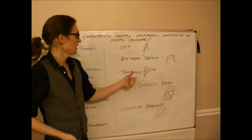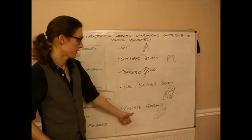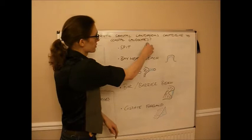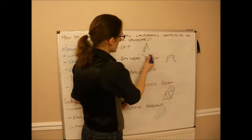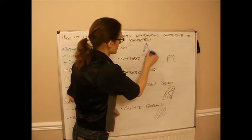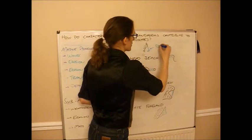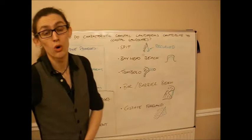So in terms of our depositional features, we've got a spit, a bayhead beach, a tombolo, a bar or barrier beach, and a cuspate foreland. A spit is where longshore drift carries on past the curve in the coast. And basically just extends outwards. And you get the sand building up. And sometimes it comes out in a straight line and sometimes it hooks round. And that creates what's called a recurved spit or hook. A bit easy to remember. Depending on prevailing wind.